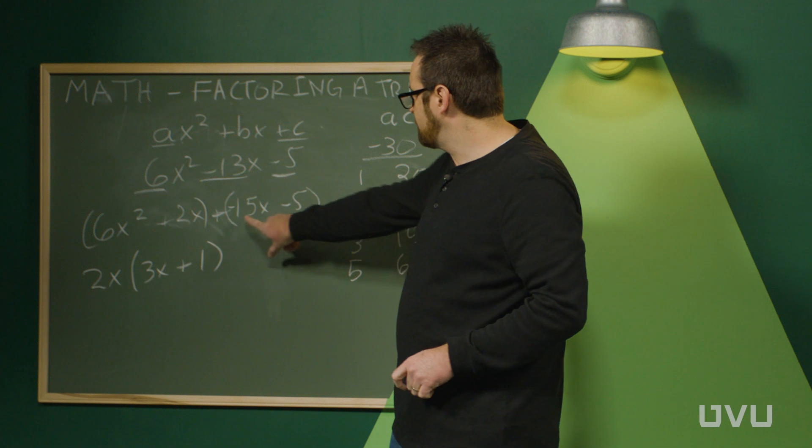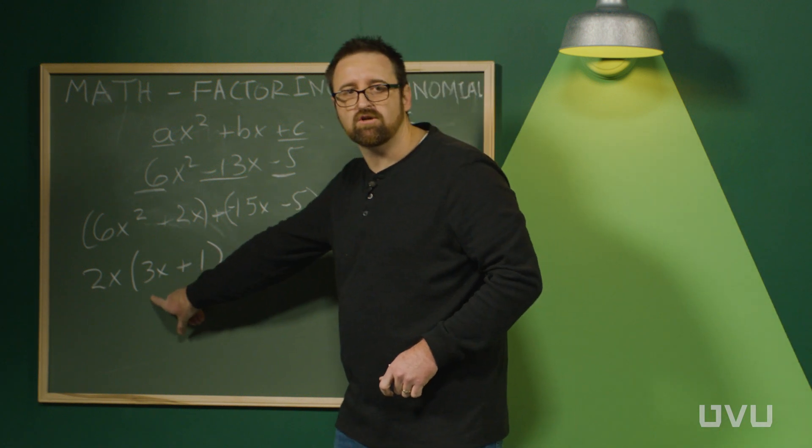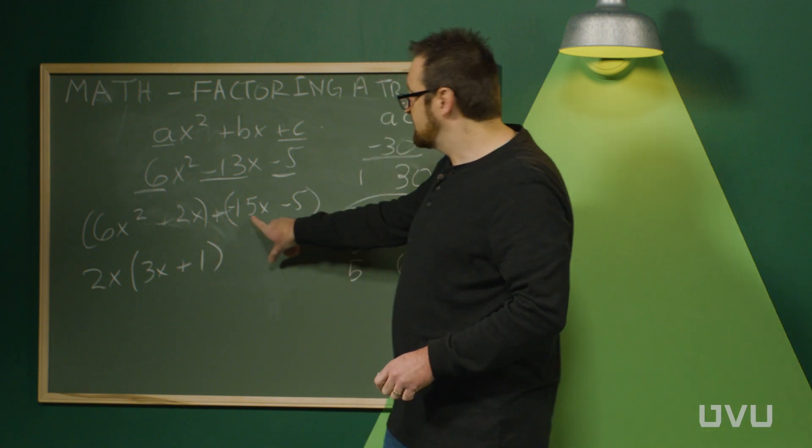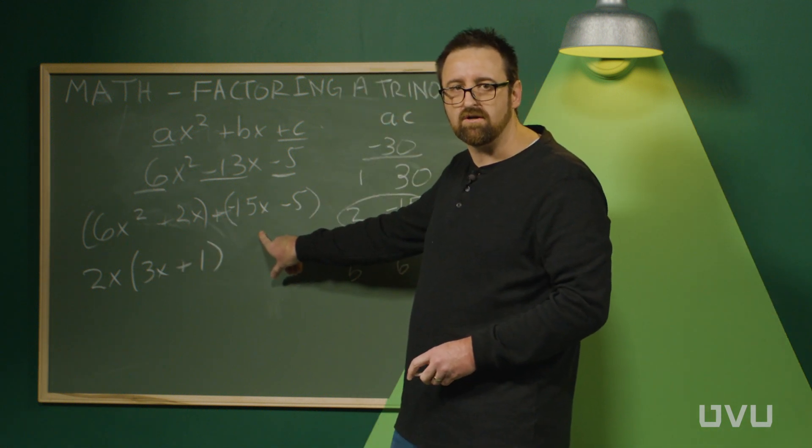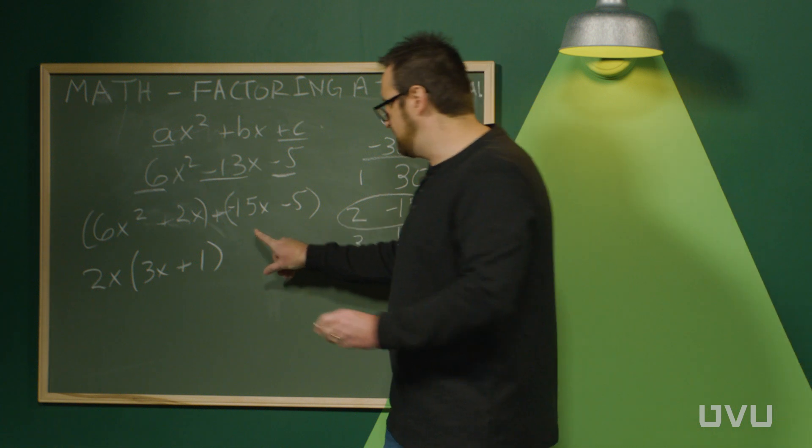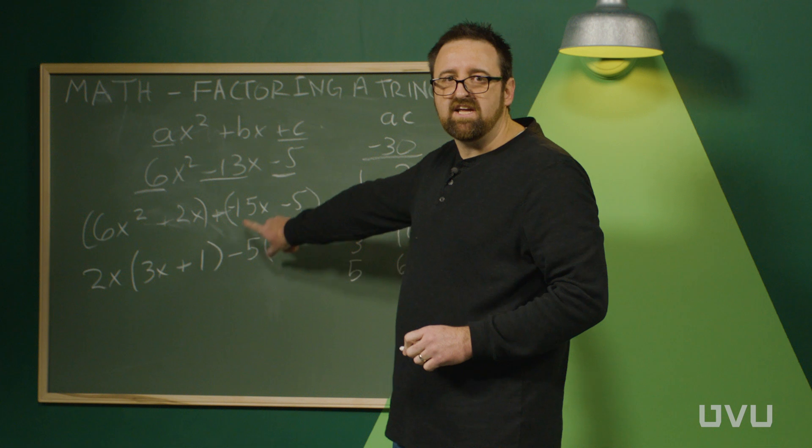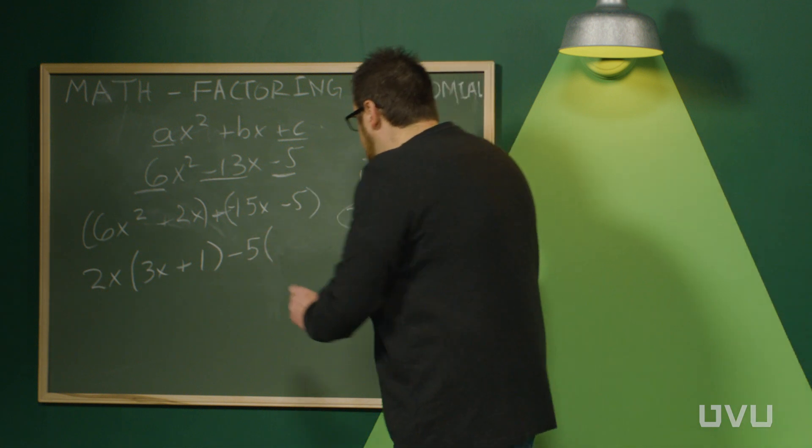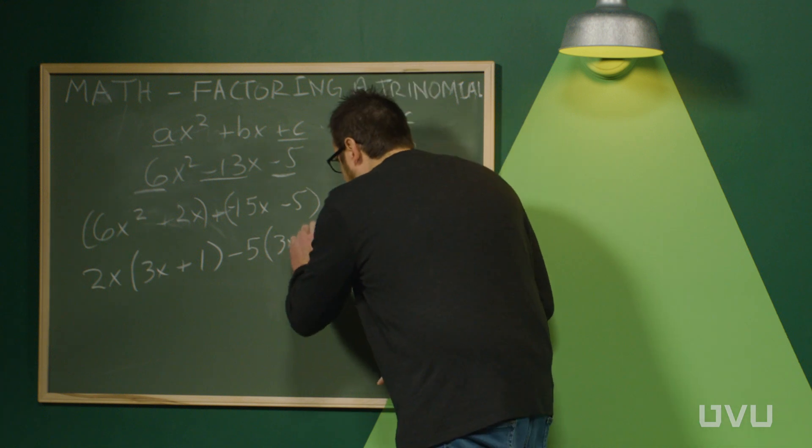Over here, you can see that you can factor out a 5. But we also want to make sure that the signs of the first terms in the parentheses stay the same. Since this one's negative and this one's positive, we also want to pull out the negative here. So we'll pull out a negative 5. Negative 15x divided by negative 5 is 3x. And negative 5 divided by negative 5 is 1.